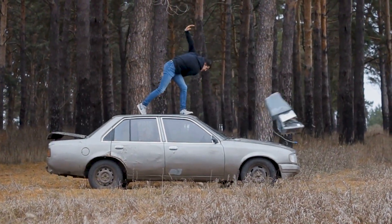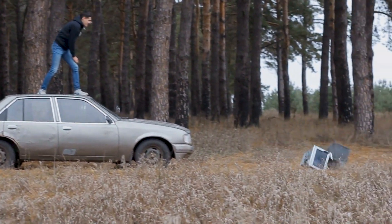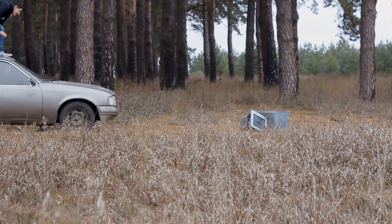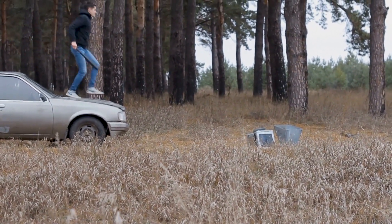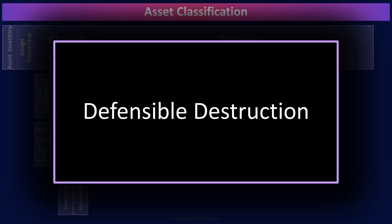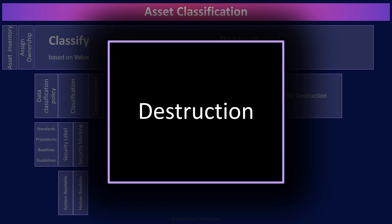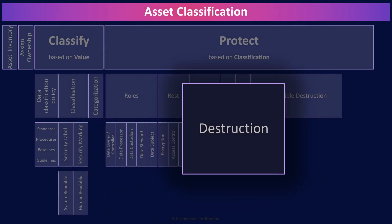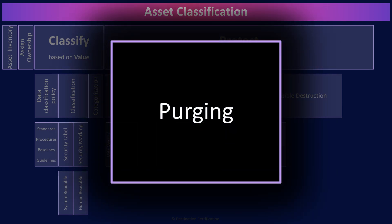There are many ways to destroy data and some are much better than others. So let's go through three main categories and then specific techniques within each. The first and very best category is destruction, which means we physically destroy the media the data is stored on. The next best category is known as purging, which means using logical or physical techniques to sanitize data, thus making it so the data cannot be reconstructed. Key word there cannot.